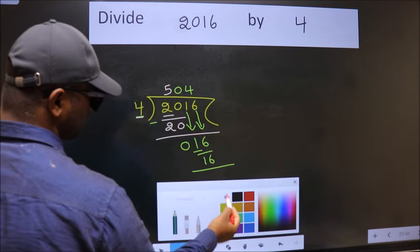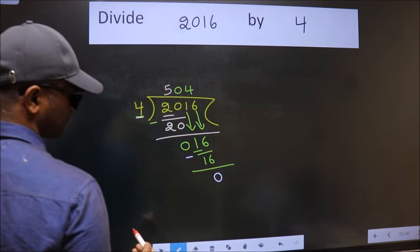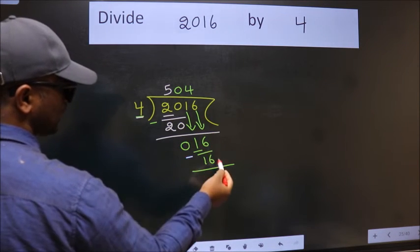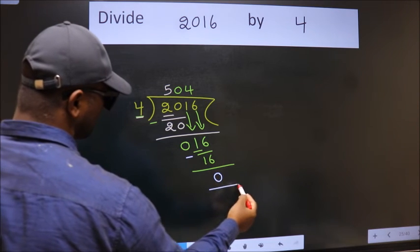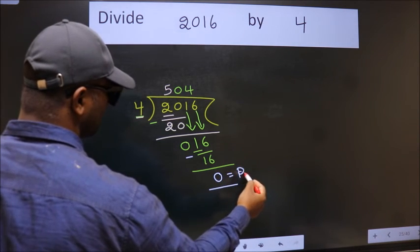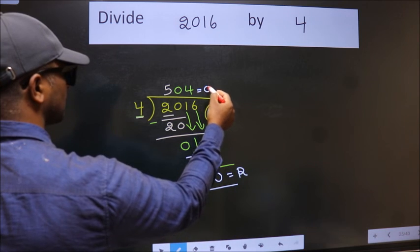Now we subtract. We get 0. No more numbers to bring down, so we stop here. This is our remainder and this is our quotient.